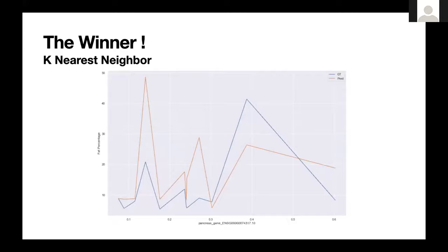The winner was K-Nearest Neighbors, where we got the best results. The x-axis shows the most important gene from the previous slide for pancreas and the y-axis is the fat percentage. The prediction in orange and the ground truth in blue show that the prediction correlates with scale — good at predicting high and low fat percentages — but the scales aren't in proportion, so it's a very good predictor of whether fat percentage is high or low, but doesn't correlate with exact percentages. Therefore a classification loss would be more accurate to look at.